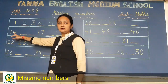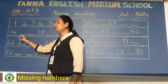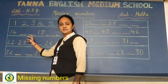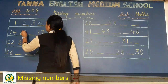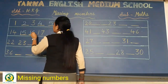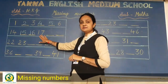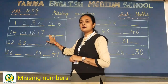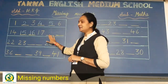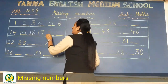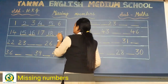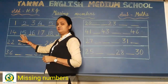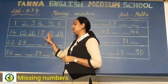अब देखो नीचे, 14 लिखा है. तो 14 के बाद क्या आएगा? Yes, 15 and 16. So write here 15, 16. फिर 17 तो देखो लिखा हुआ है. तो 17 के बाद क्या आएगा? Yes, 18 and 19. So write 18, 19. यह भी पूरी लाइन complete हो गई. 14, 15, 16, 17, 18 and 19.